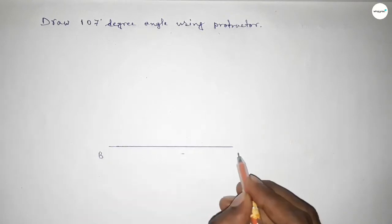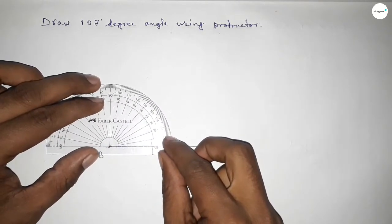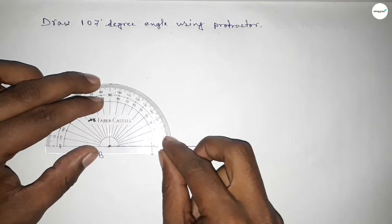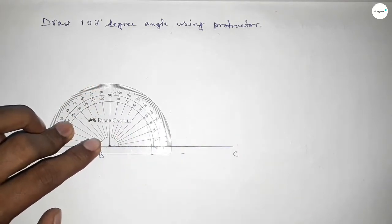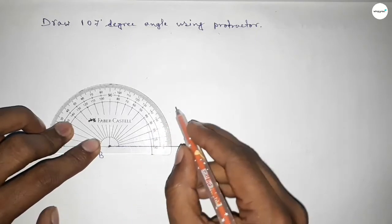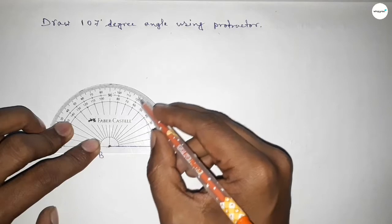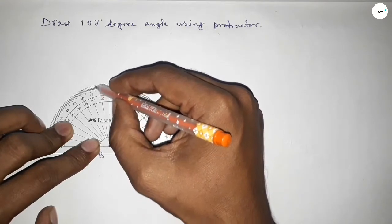Next, taking here point B and here point C. Now putting the protractor on point B perfectly, then counting the angles. So this is the starting angle: 0, 10, 20, 30, 40, 50, 60, 70, 80, 90, 100, and this is 105, 106, 107. So this is 107 degrees.